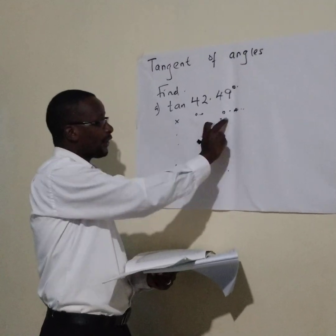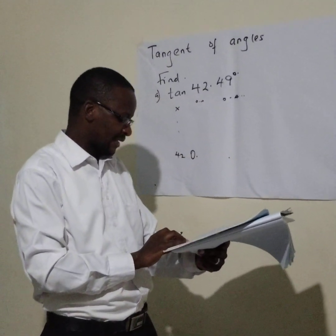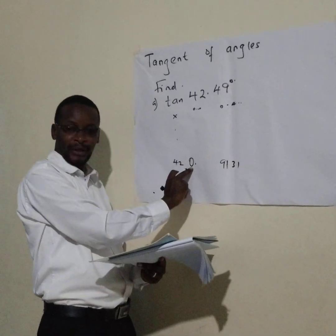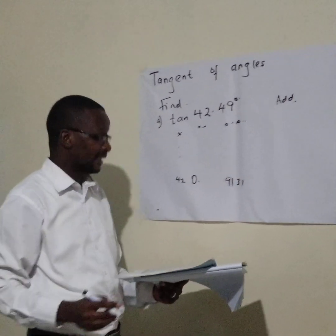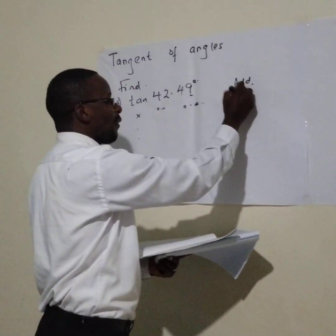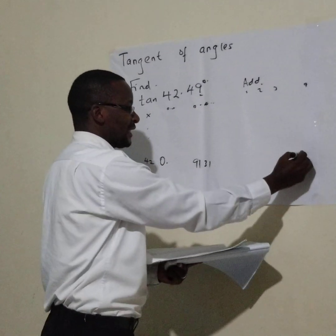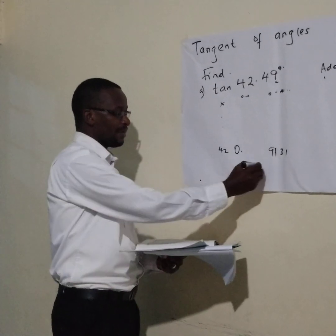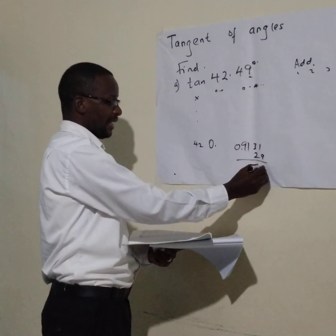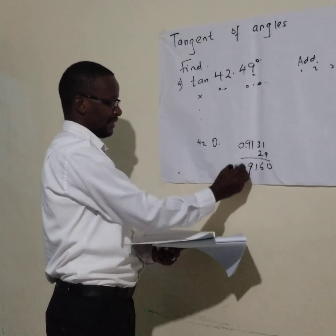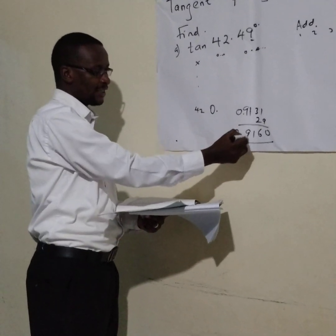At 42.4 you read the figure, which is 0.9131 — remembering to carry the '0 point.' Then for the mean differences, which are headed 'add,' you go to column 9. Alongside row 42, the mean difference is 29. You add 29 to 0.9131 from the right, giving you 0.9160. So the tangent of 42.49 degrees is 0.9160.